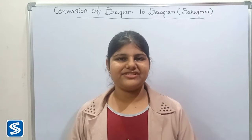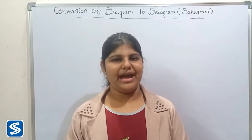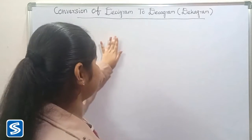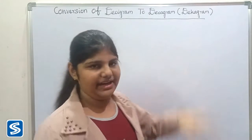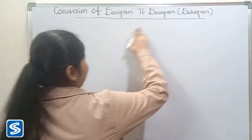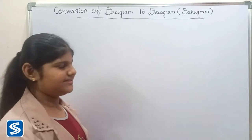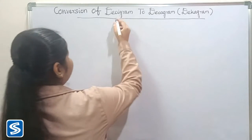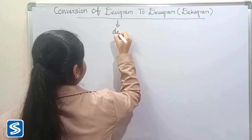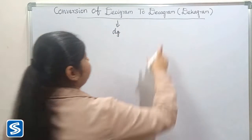Hi friends, welcome to SOMSCH channel. In this video I am going to teach how to convert desigram into decagram. Desigram and decagram are the metric system of mass units. The short form of desigram is DG, and the short form of decagram is DAG.